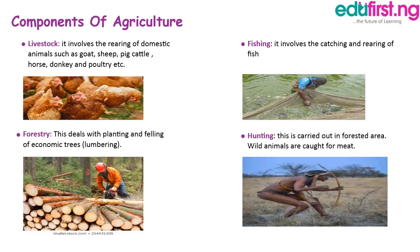Another component of agriculture is livestock. Livestock involves the rearing of domestic animals like goats, sheep, pigs, cattle, horse, donkey, and poultry. Thirdly, we have forestry, which deals with the planting and felling of trees. Next we have fishing, which involves the catching and rearing of fish. Then hunting, which is carried out in forest areas where wild animals are caught for meat.